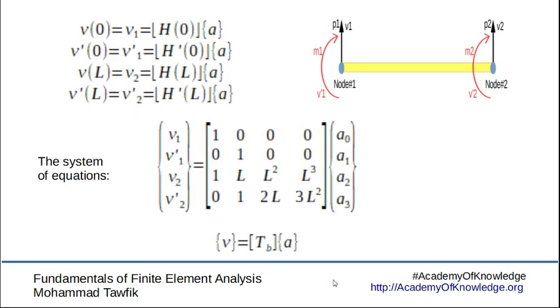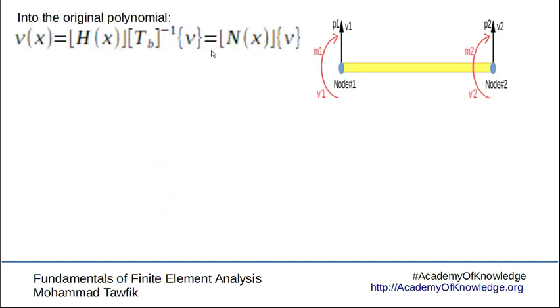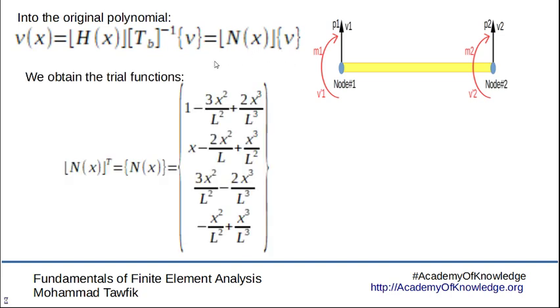Now we get the system of equations with a four by four transformation matrix, which can be inverted to get the coefficients in terms of the degrees of freedom. This gives us the shape functions or the trial functions of the beam, N of x, and they will all be cubic functions as we should have expected by now.